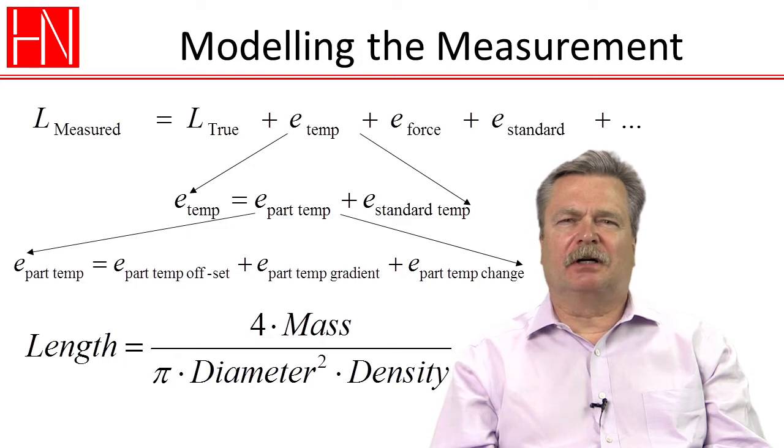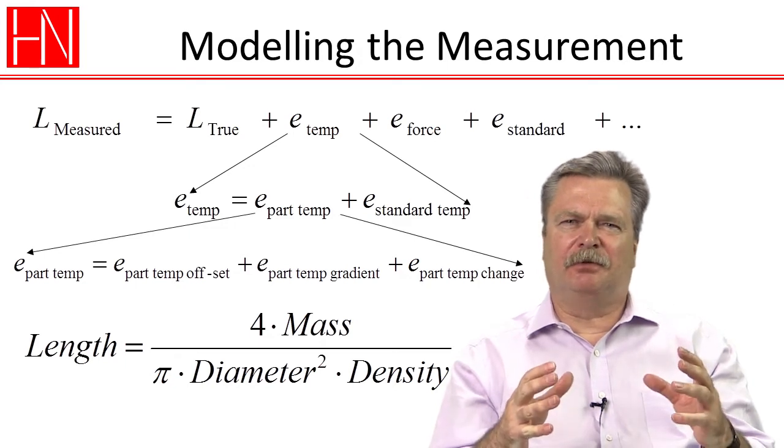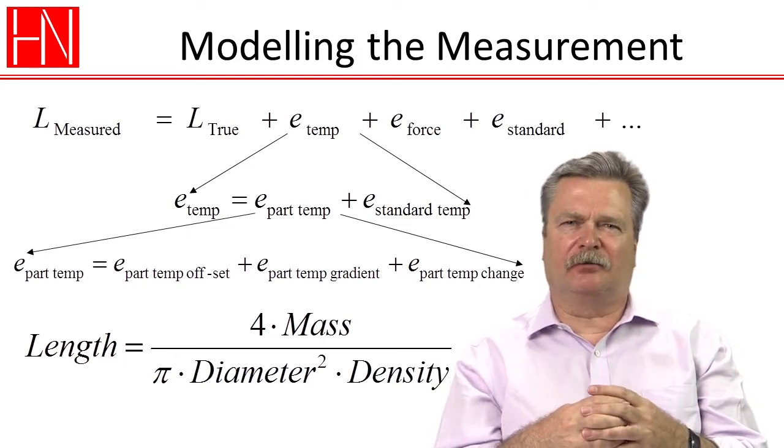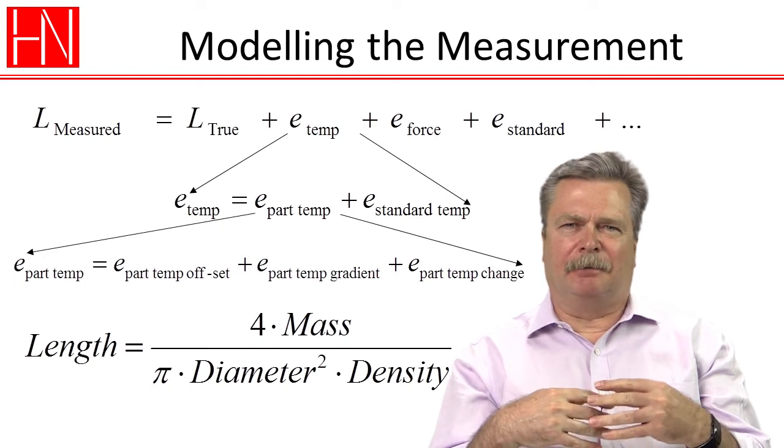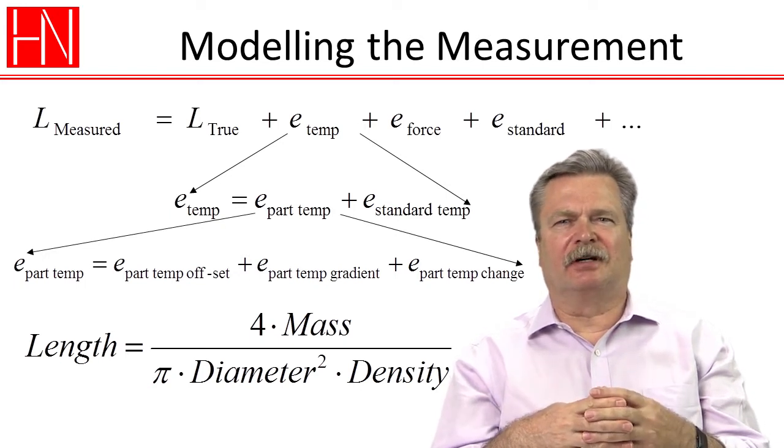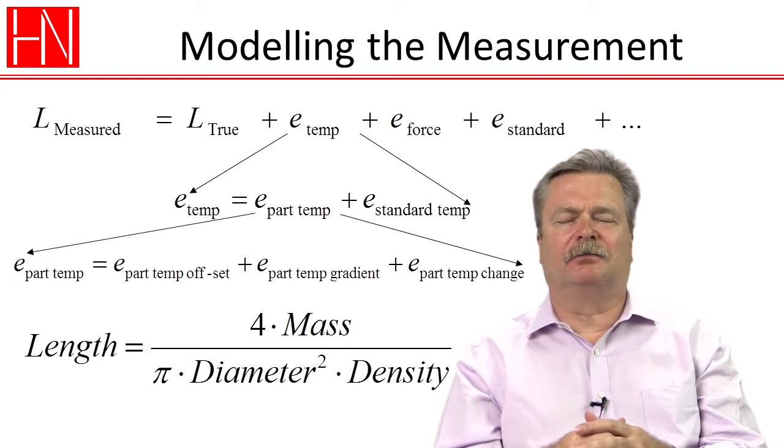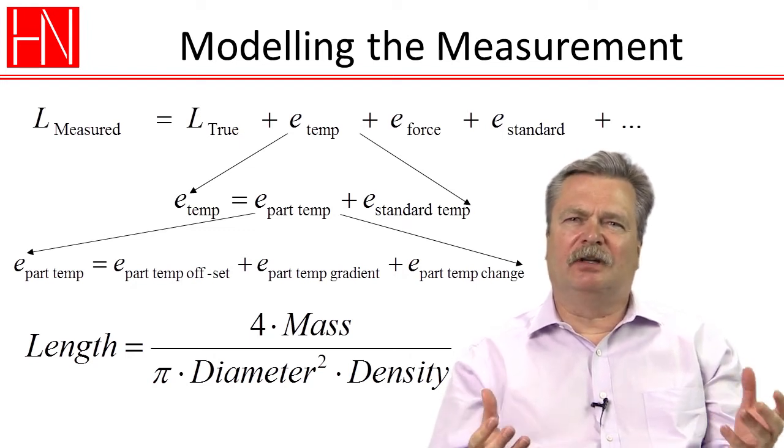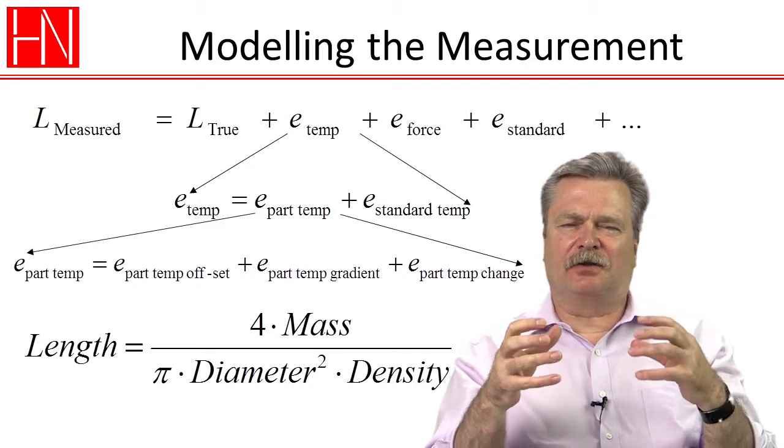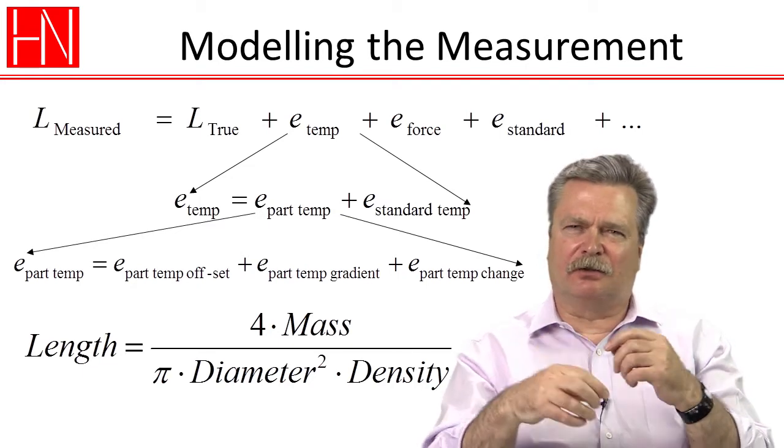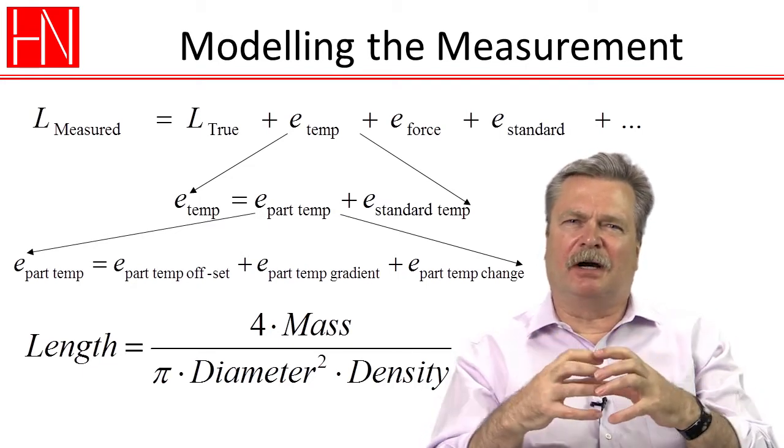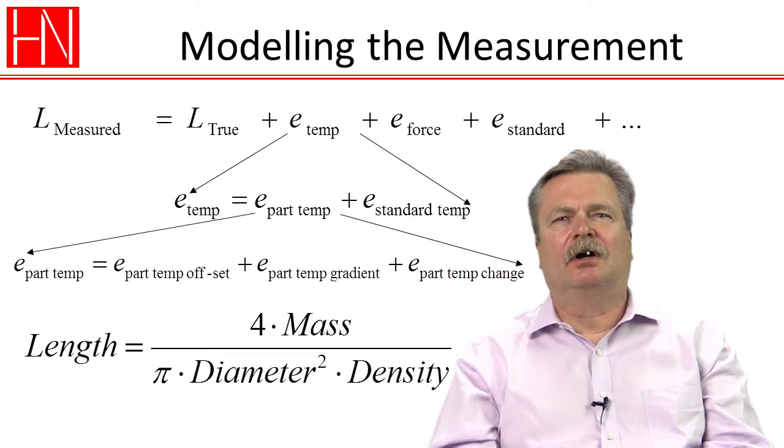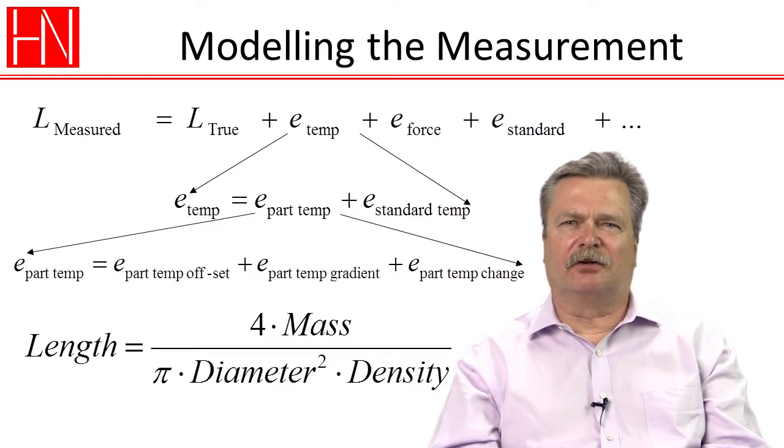We also talked about the idea of there sometimes being more complex kinds of equations and went through the example of trying to determine the length of a cylinder by measuring the mass, the diameter, and the density of it. And how we then take the base measurements, those three individual measurements, and the uncertainties of them, and how we then combine them together for an overall uncertainty of the length determination.